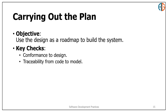Step three is carrying out the plan. Now that we have a model, we use it as a roadmap to build the system. One important aspect is to ensure that the code conforms to the design and that there is traceability between the code and the original model.